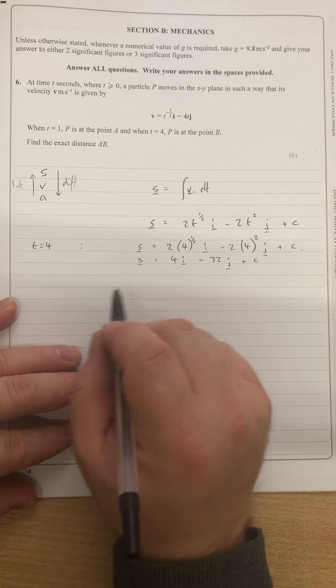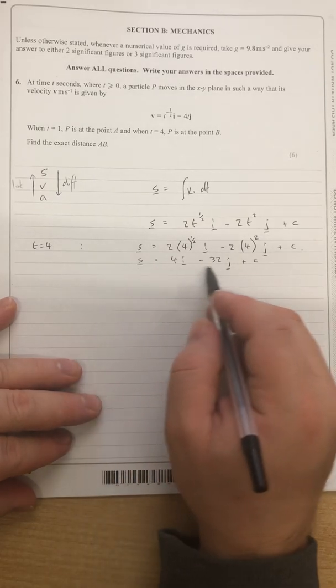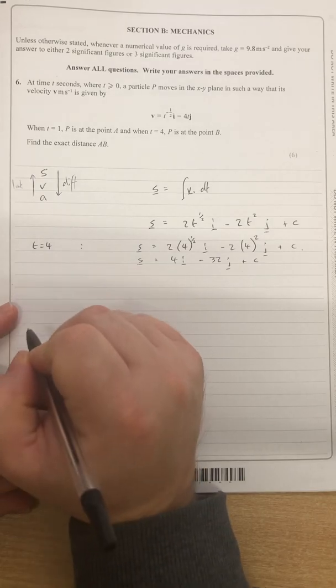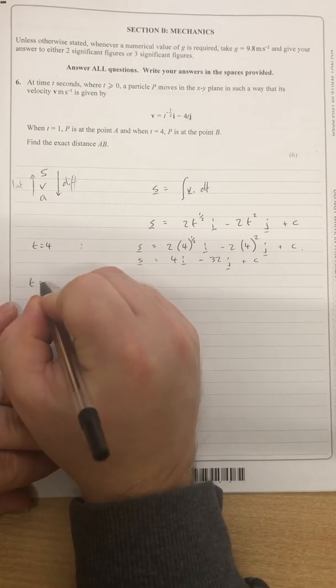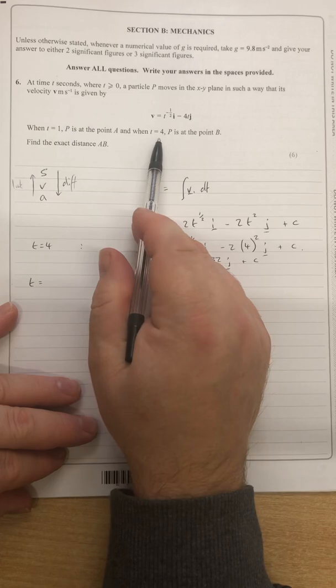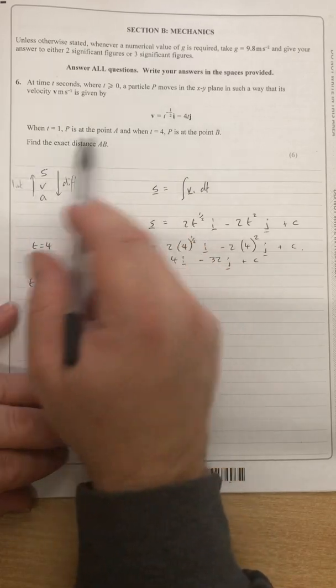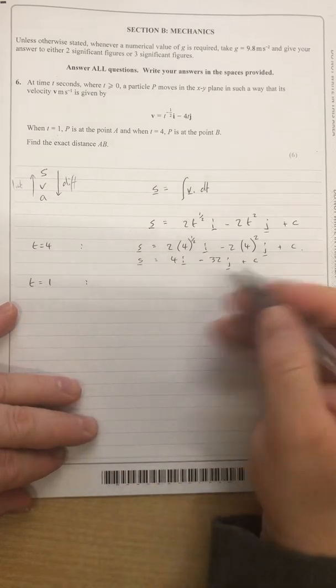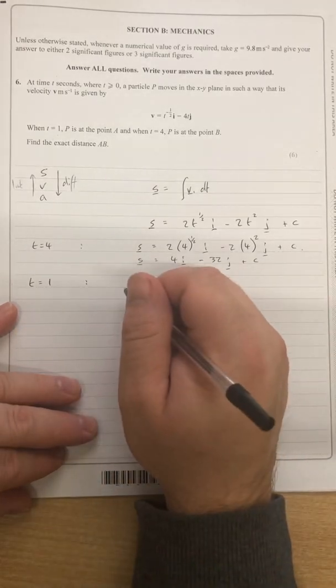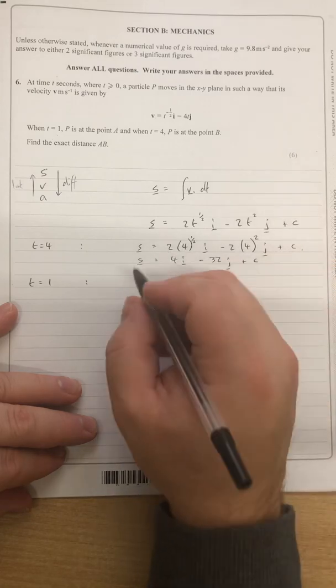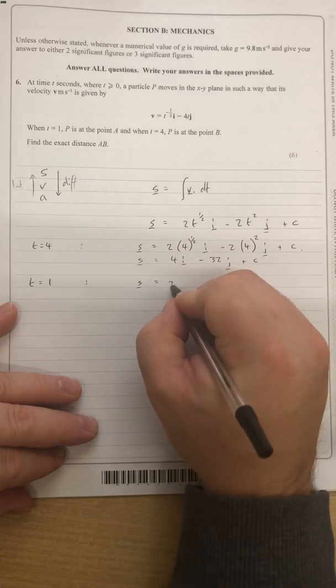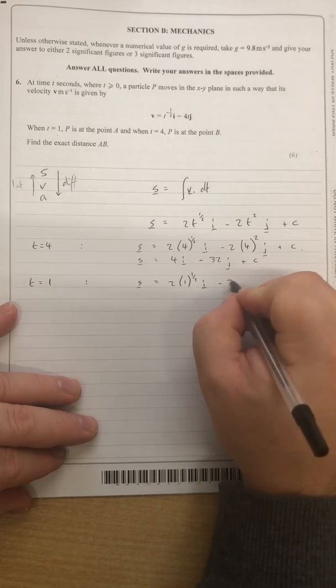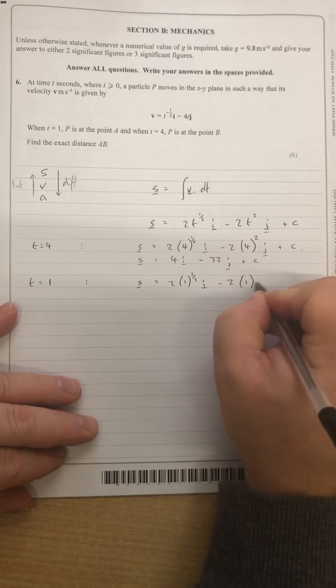And then I'm going to do the same thing, remember this is displacement at the moment. And then I'm going to do the same thing for when t equals the other value, when t equals 1. Perhaps I should have done them the other way around, doesn't matter though. So when t equals 1, we get s would be 2 times square root of 1, i minus 2 times 1 squared.